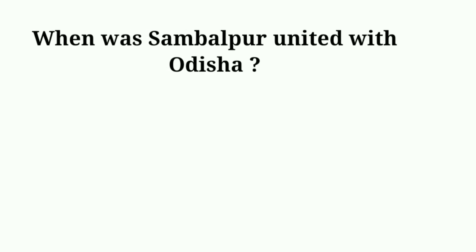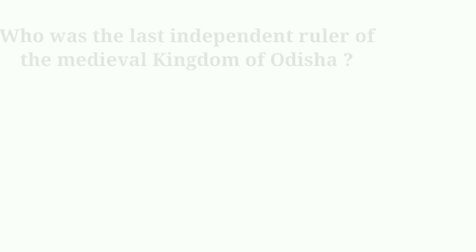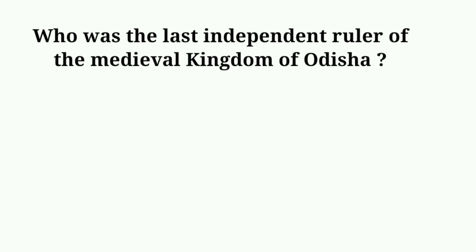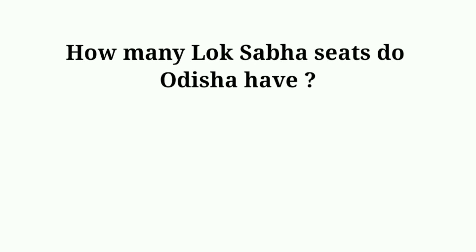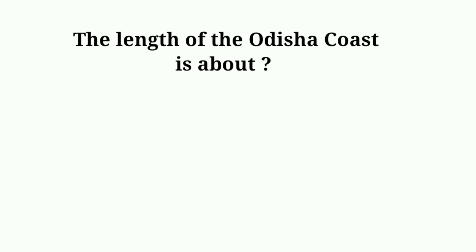When was Sambalpur united with Odisha? Answer: 1936. Who was the last independent ruler of the medieval kingdom of Odisha? Answer: Mukundadeva. How many Lok Sabha seats does Odisha have? Answer: 21. The length of the Odisha coast is about? Answer: 450 kilometres.